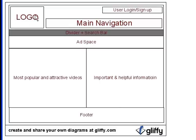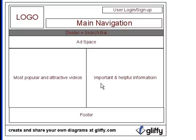So you have a logo section here, a main navigation section here — these will be divided into multiple tabs and subcategories. You don't have to come up with that right now, but if you have that in mind it's best to put it in. User login and sign up is right here. A divider or search bar can go in between. A lot of sites usually put a horizontal banner ad right at the top. Then on the left side you have the most popular and attractive videos or content, and on the right side important or helpful information. Then you have the footer.